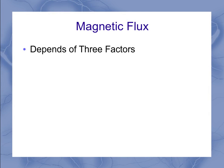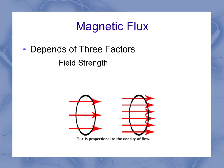Now, that magnetic flux is going to depend on three factors. It's going to depend on the field strength. Remember that the field strength is represented by the density of the arrows. So the stronger your field is, the more arrows you've got more closely packed together representing those field lines.